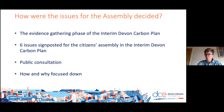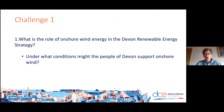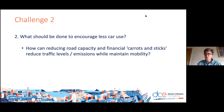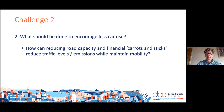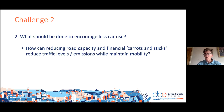So what are the three topics? Number one is about energy: what is the role of onshore wind energy in the Devon renewable and Devon carbon strategy, and under what conditions might the people of Devon support onshore wind? We know that there needs to be a shift towards different kinds of energy sources. Number two is about transport: what should be done to encourage less car use — in particular, less use of cars powered by fossil fuels such as diesel and petrol? How can reducing road capacity and financial carrots and sticks reduce traffic levels and emissions while maintaining the mobility required for economic, social, and environmental concerns?